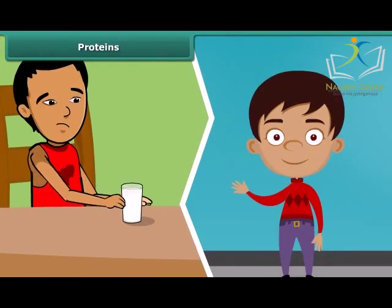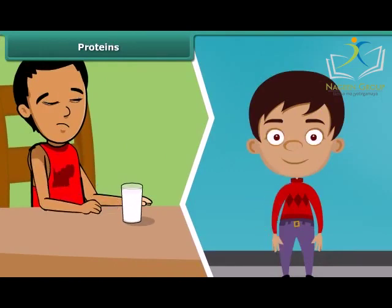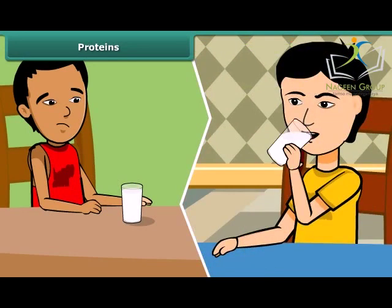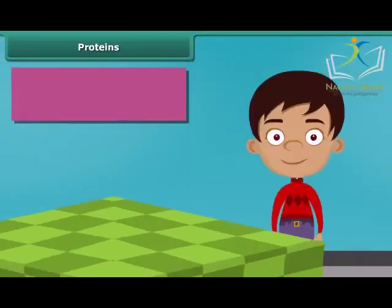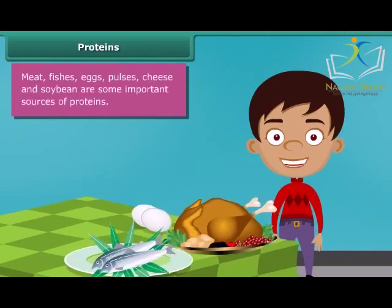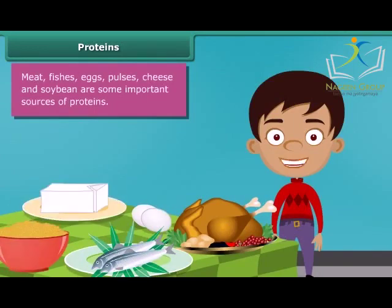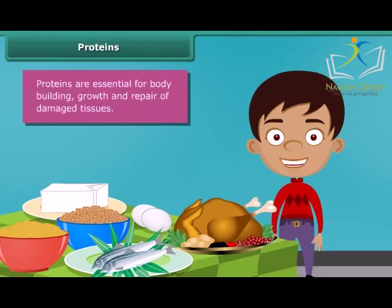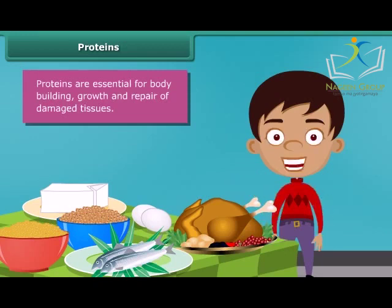Some children who do not drink milk become weak and underdeveloped because milk contains required proteins for our growth. Meat, fishes, eggs, pulses, cheese and soybean are some other important sources of proteins in our diet. The major role of proteins is building and repairing of damaged tissues. Along with carbohydrates, they are also a source of energy.